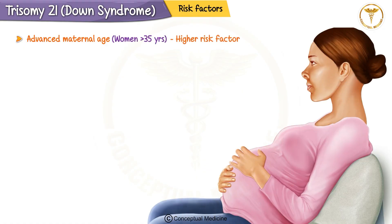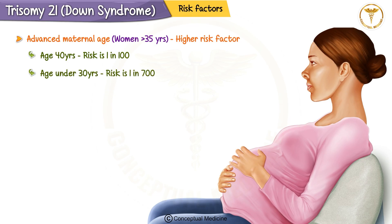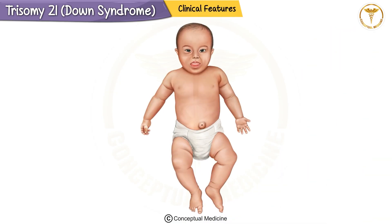Advanced maternal age is one of the biggest risk factors. Women over 35 have a significantly higher chance of having a child with Down syndrome due to age-related changes in egg cells. For instance, at age 40, the risk is about 1 in 100, compared to 1 in 700 for women under 30. That's why age is an important consideration during pregnancy.